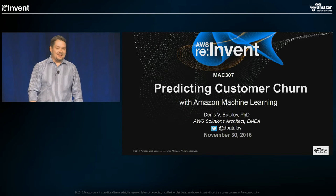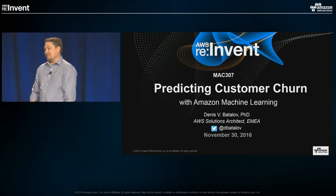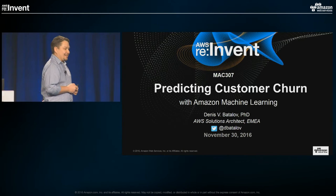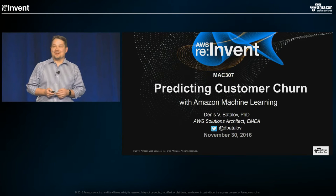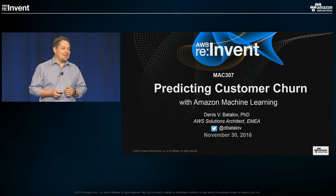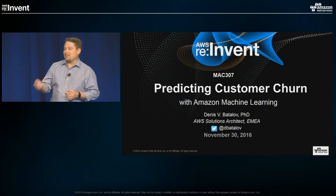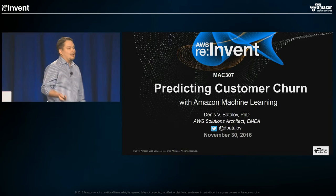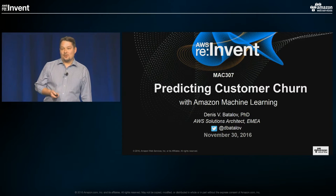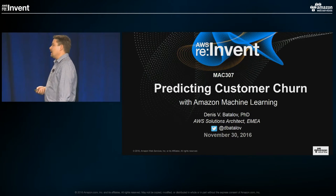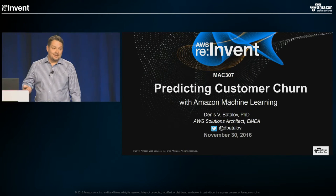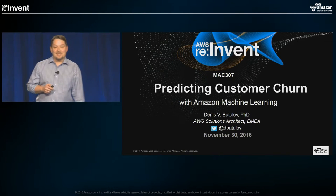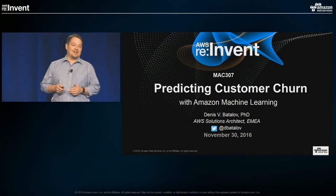Welcome to my presentation. Really glad to see you all here so late in the afternoon — thanks for staying, that shows you really care. A few words about myself: my name is Denis Batlov, and I am a solutions architect currently based in Luxembourg, working out of EMEA. My role is generally to help companies move their infrastructure to the cloud, but I also specialize in machine learning, and hence I'm here.